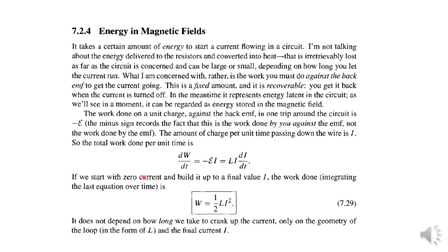This is the current growth from zero current to final current I. For energy stored, we integrate: dW equals L I dI, and integrating — with L constant — integral of I dI is I squared over 2. So this work done during the current growing from zero to I is W equals half L I squared.